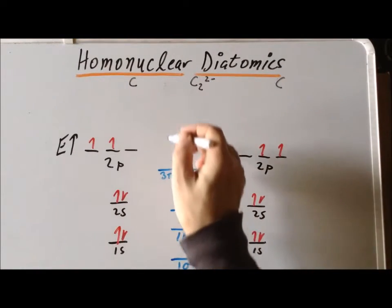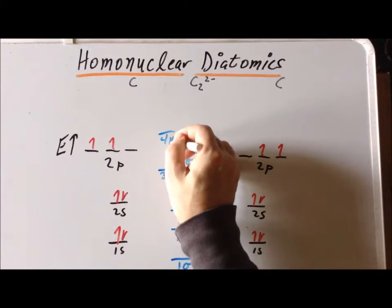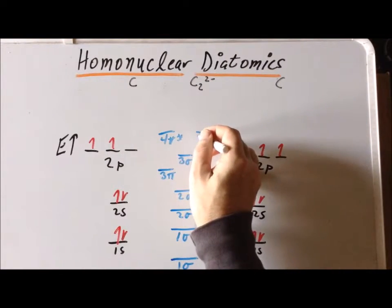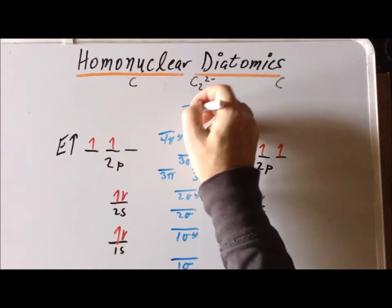Higher in energy, we end up with a doubly degenerate pi anti-bonding combination. And the highest energy of all is a sigma bonding combination.